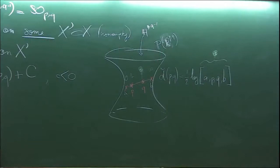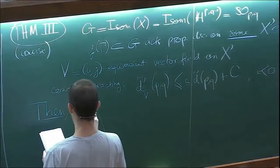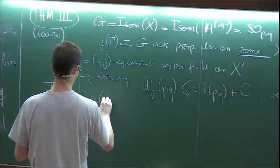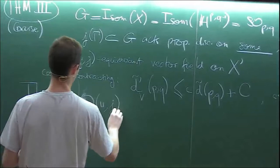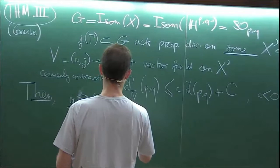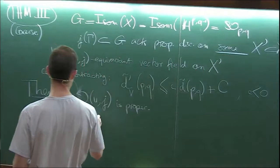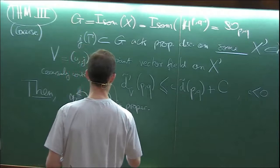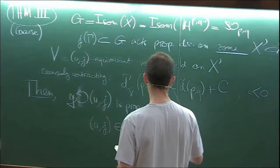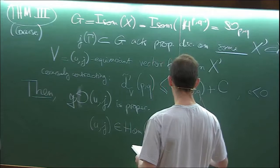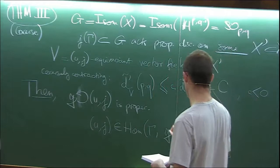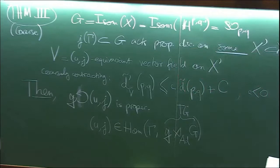So going back to the statement, if you have such a vector field, then the affine action on the Lie algebra given by u and j, where u was the co-cycle, is properly discontinuous. So as before, u, well, you can do u j as a representation valued in the semi-direct product of g by its Lie algebra, which is also the tangent group to g.